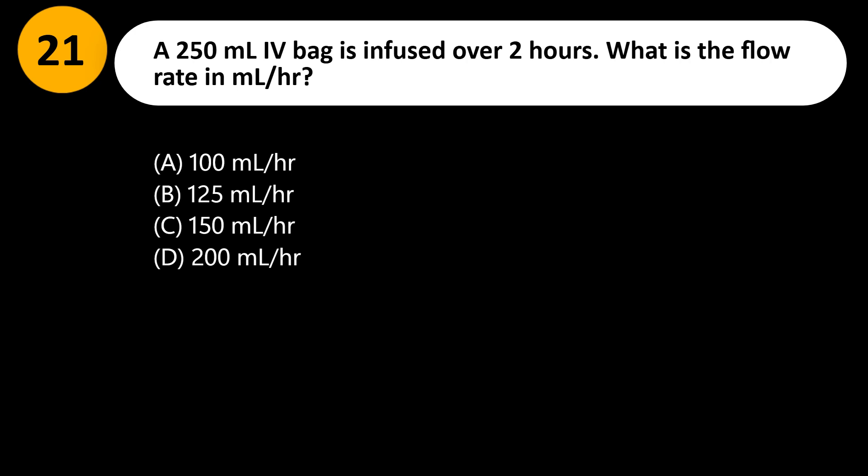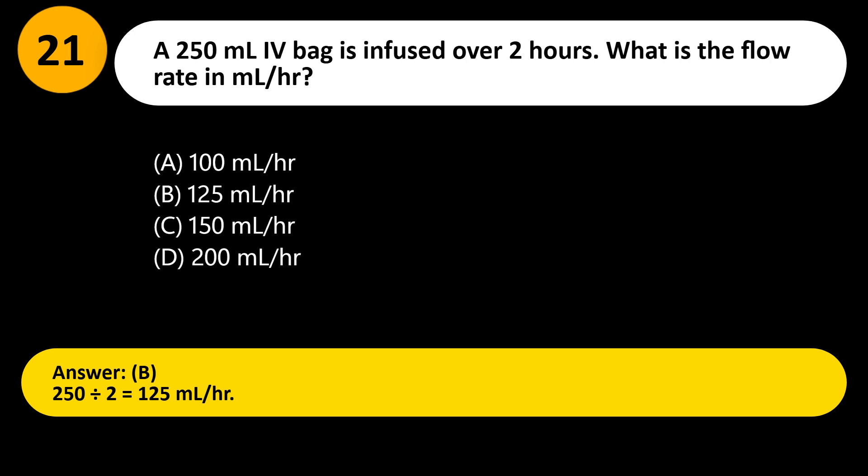A 250 mL IV bag is infused over 2 hours. What is the flow rate in mL/hr? A) 100 mL/hr, B) 125 mL/hr, C) 150 mL/hr, D) 200 mL/hr. Answer: B. 250 divided by 2 equals 125 mL/hr.